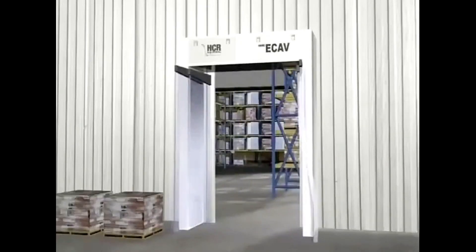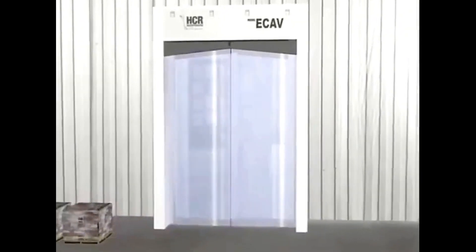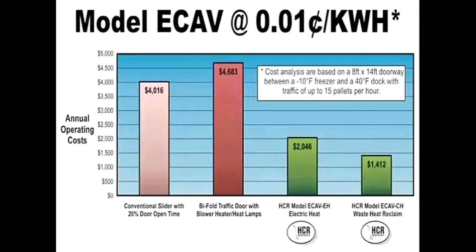Some HCR units can optionally utilize a waste heat reclaim system, making use of the plant's refrigeration waste heat, a by-product of cooling. When using waste heat reclaim, annual operating costs are significantly reduced. The amount of heat that is required depends on the doorway size, model selected, the type of refrigerant, and the levels of temperature and humidity existing on each side of the opening.